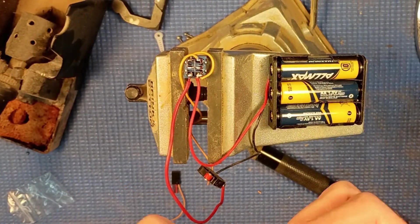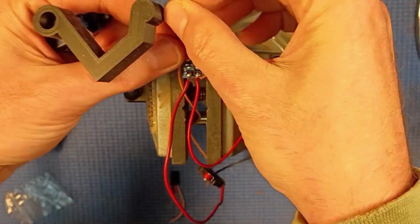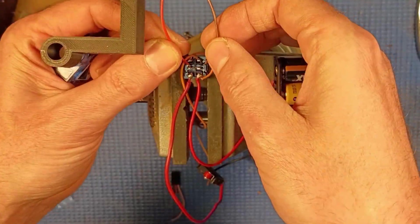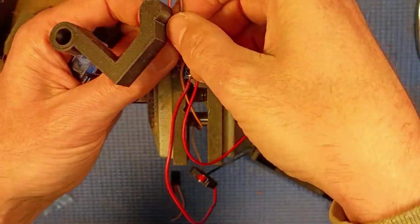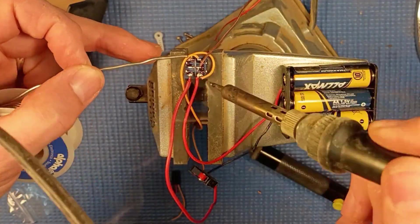One nice thing about the circuit is when the finger retracts back into the box, it cuts the power to the battery pack, so there's no drainage of power. I've had some of these for a couple of years and the batteries seem to be still going very strong.